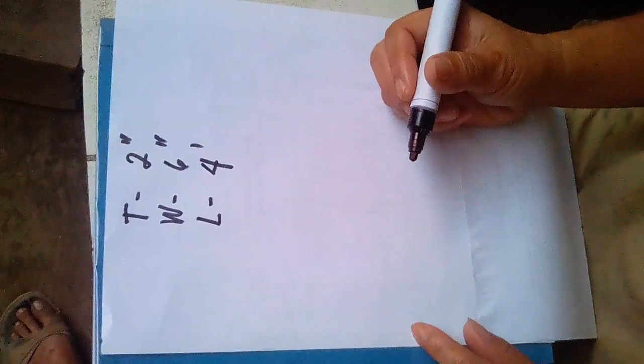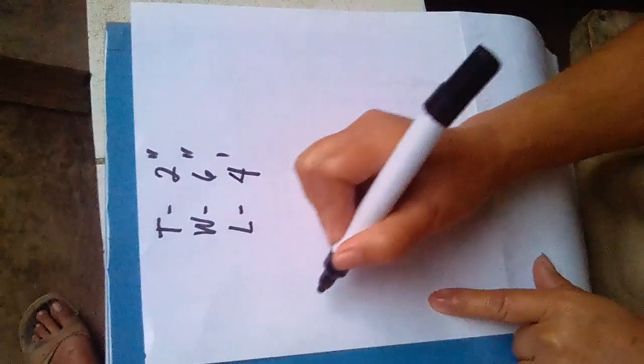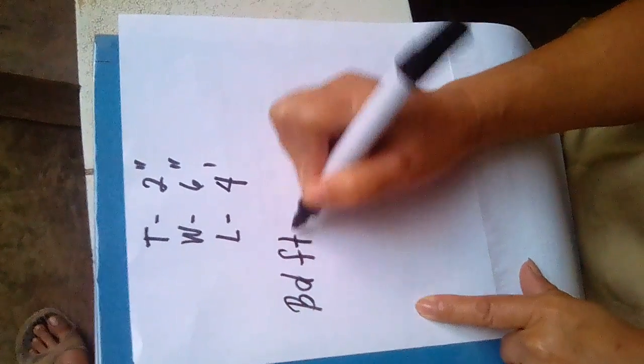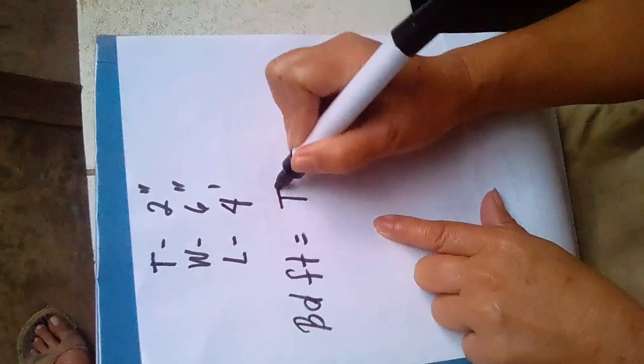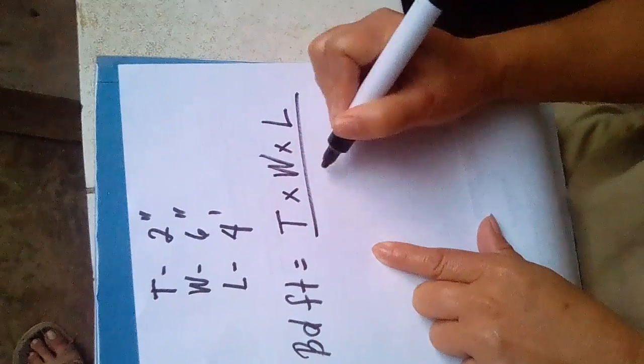Next, we need to write the formula. The formula is board feet equals thickness times the width times the length all over 12.